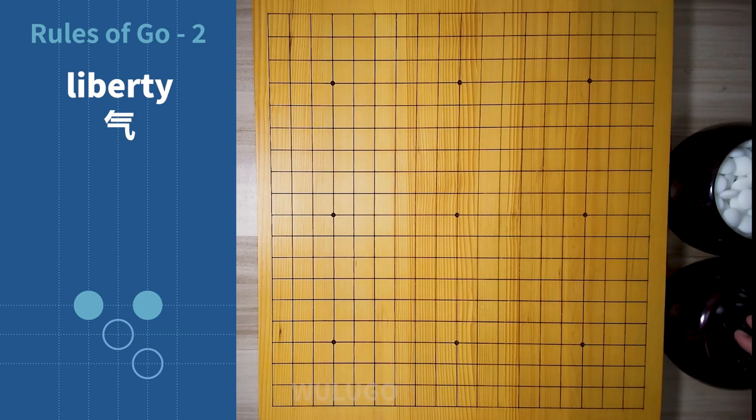The intersection of the four directions of the board—up, down, left, and right—is called liberty. A single stone on the edge of the board has three liberties, and a single stone in the corner of the board has two liberties. A stone without a liberty is a dead one and must be taken away from the board.